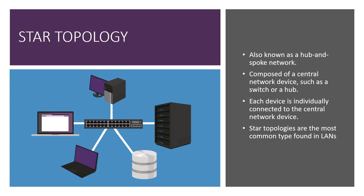Our next one is the star topology, also known as hub and spoke networks. It's composed of a central network device — most times either a switch or a hub, though switches primarily make up most star topologies nowadays. Each device is individually connected to this central device, so if a device goes down it only affects that device and doesn't really affect anyone else. Star topologies are your most common topology found in LANs.